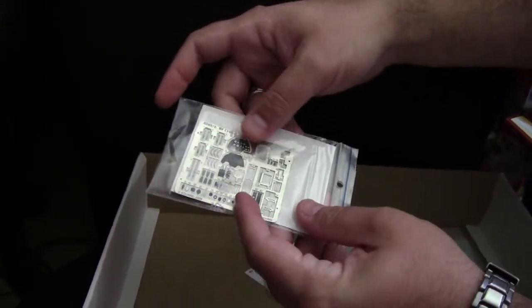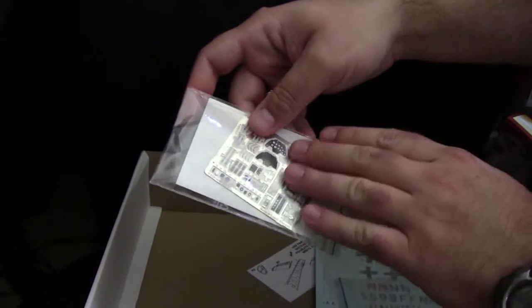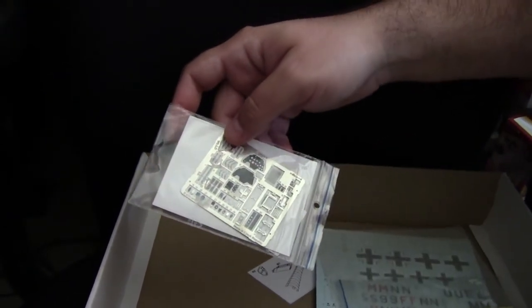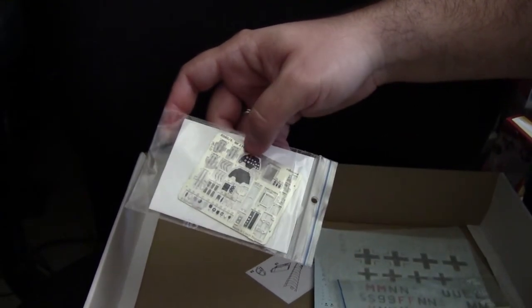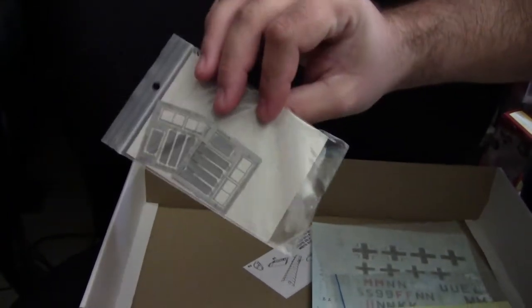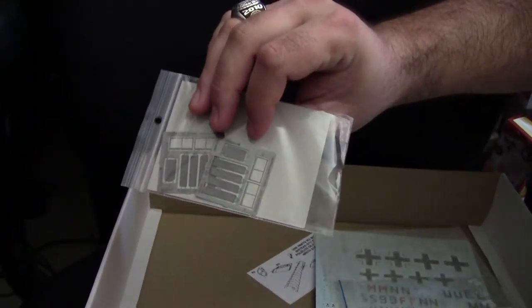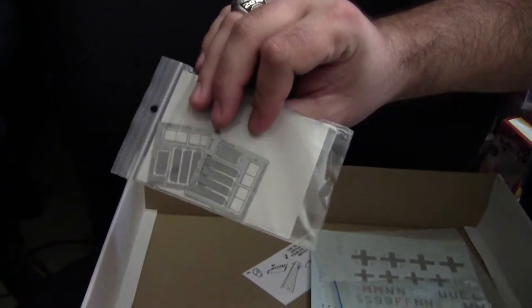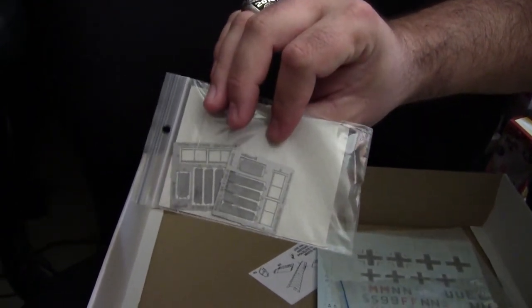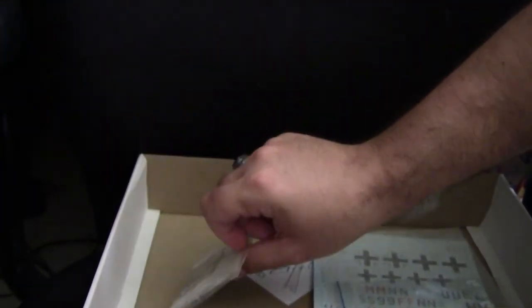Next up, we have our photo-etch fret that includes detailing for the cockpit area, our instrument panels, as well as seat belts. We also have our various radiator inlet covers, which are all very nicely done and definitely add a greater level of realism to the kit.